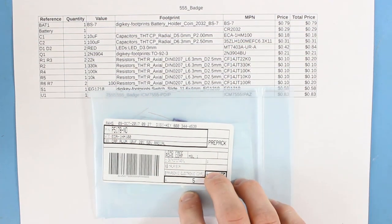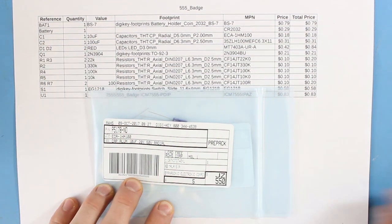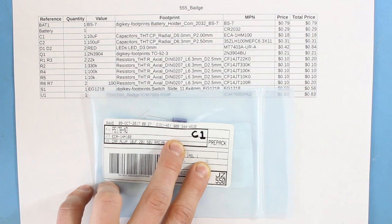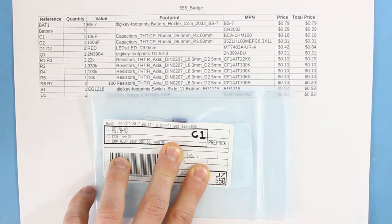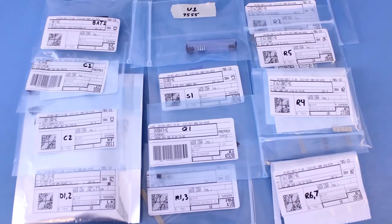Take a look at the RefDes on the BOM. The 10uF capacitor is to be used for C1. Write C1 somewhere on the bag's label so you know where the part is supposed to go on the board. Do this for all your parts and double check that you have everything according to the BOM.